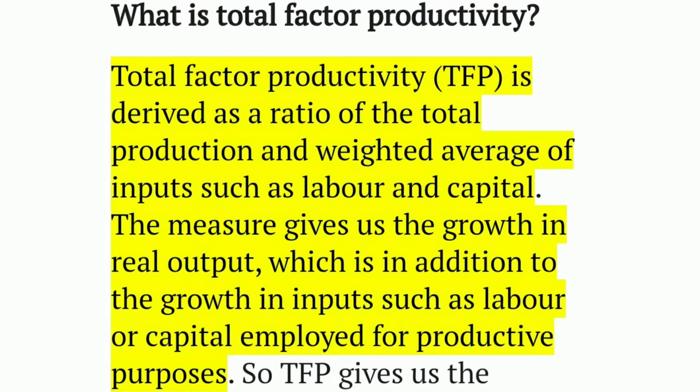What is total factor productivity? Total factor productivity, TFP, is derived as a ratio of the total production and weighted average of inputs such as labor and capital.